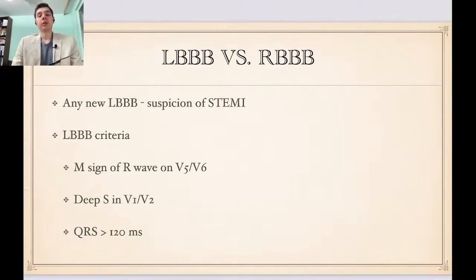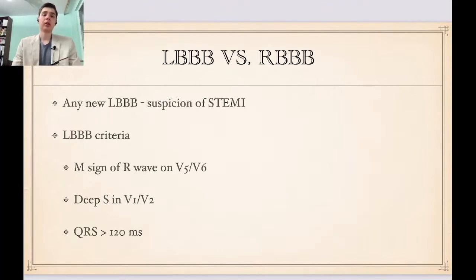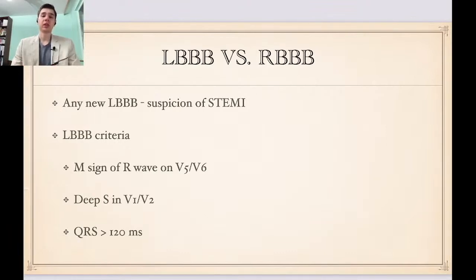Any new left bundle branch block will raise suspicion of a STEMI. The criteria for left bundle branch block are M sign of R wave on V5 and V6, a deep S wave in V1 and V2, and a QRS of greater than 120 milliseconds.